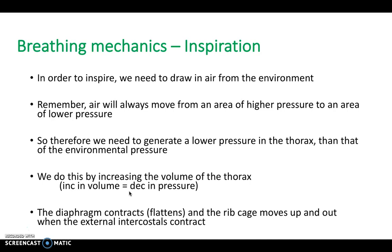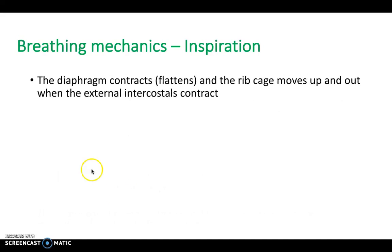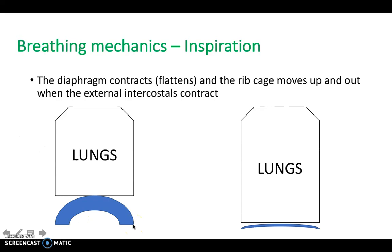We increase the volume of our thorax by contracting the diaphragm. The diaphragm is almost dome-shaped at rest; when it contracts, it flattens, increasing the volume of the thoracic cavity. The ribcage also moves up and out in a pump-handle mechanism, driven by the external intercostals. As the diaphragm flattens, the lungs expand into that space — volume increases, pressure decreases, and air naturally moves in.